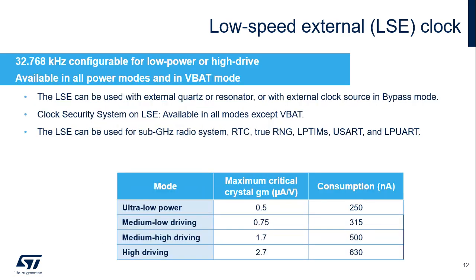The 32.768 kHz low-speed external oscillator, or LSE, can be used with an external quartz or resonator, or with an external clock source in bypass mode. The oscillator driving capability is programmable; four modes are available, from ultra-low-power mode with a consumption of only 250 nanoamps to high-driving mode. A clock security system monitors failure of the LSE oscillator; in case of failure, the application can switch from the RTC clock to the selected LSI clock. The clock security system is functional in all modes except VBAT, and also functional under reset. The LSE can be used to clock the sub-gigahertz radio system, the RTC, true RNG, the low-power timers, the USART, and low-power UART peripherals.